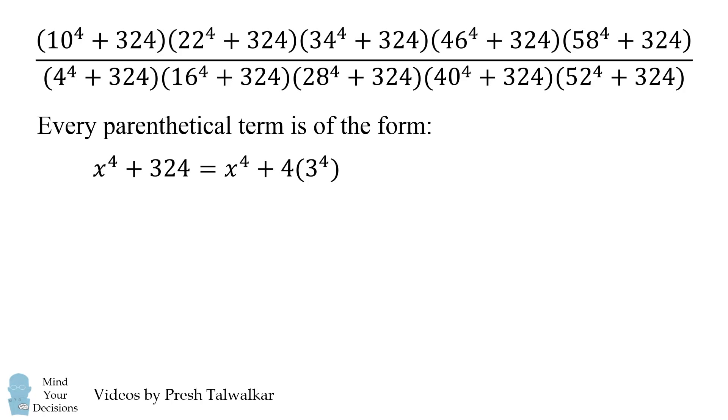I didn't know this trick, but apparently in mathematical competitions there is a well-known identity called the Sophie Germain identity. It states that a^4 + 4b^4 is equal to the following. It's the product of these two terms. It's a^2 + 2b^2 - 2ab, and the other term is a^2 + 2b^2 + 2ab.